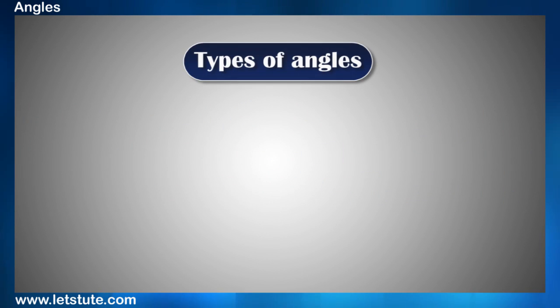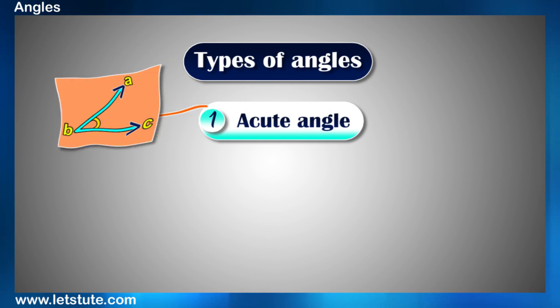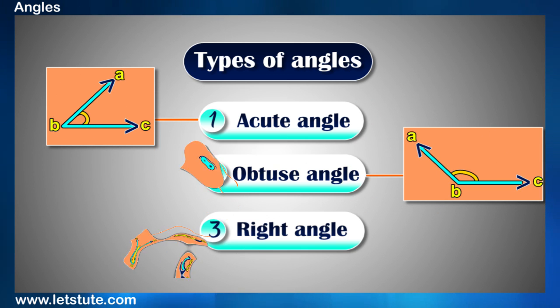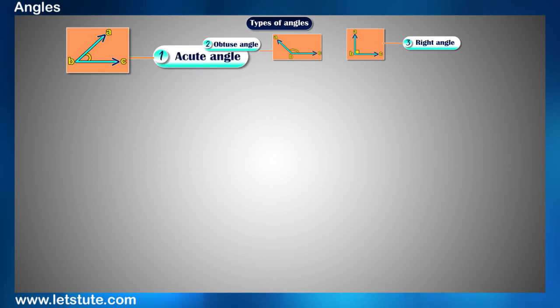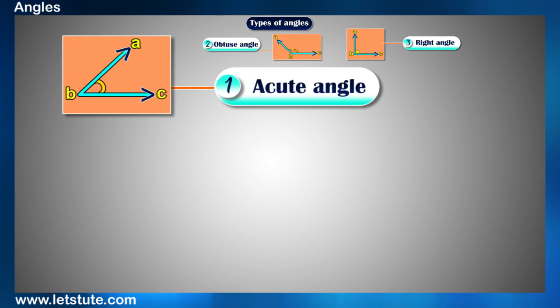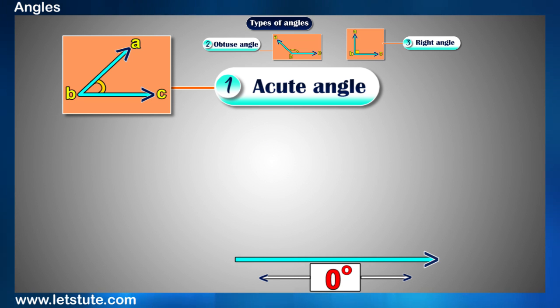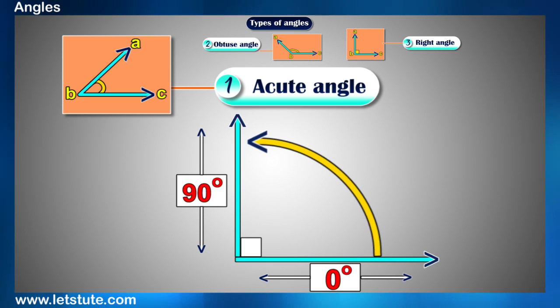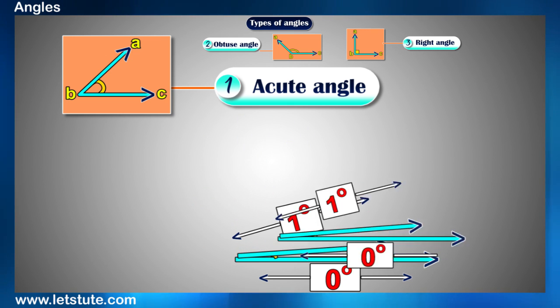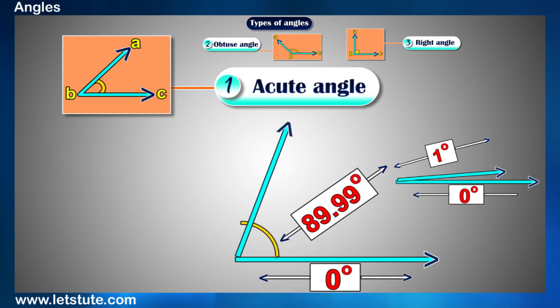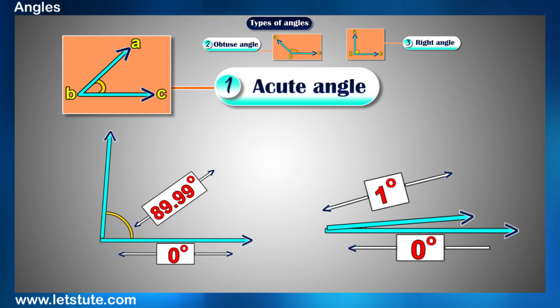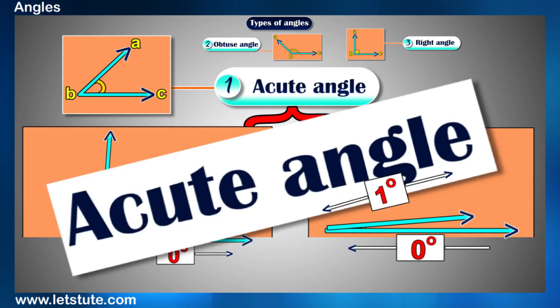So a few basic type of angles are acute angle, obtuse angle and right angle. Acute angle where acute means sharp and these angles measures anything between 0 degrees and 90 degrees. An angle which have maybe a measure of 1 degree or maybe 89.99 degrees. But both will be acute angles only.